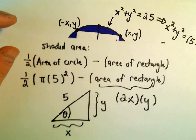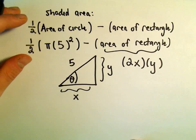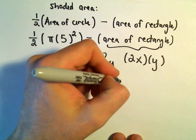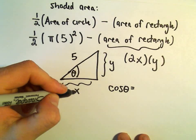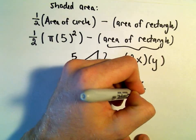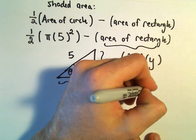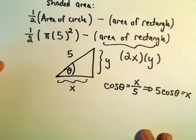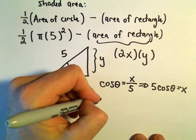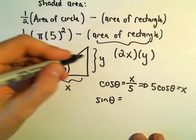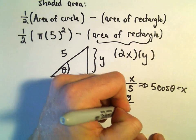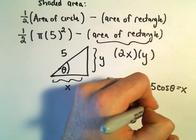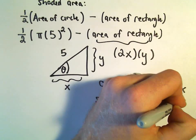So now we're simply just trying to represent x and y in terms of theta. We can say cosine of theta is going to be adjacent over hypotenuse. And if we multiply both sides by 5, we'll just get that 5 cosine theta equals x. Likewise, we can say that sine of theta is going to be opposite over hypotenuse, so y over 5. And we can multiply both sides by 5 and get 5 sine theta equals y.